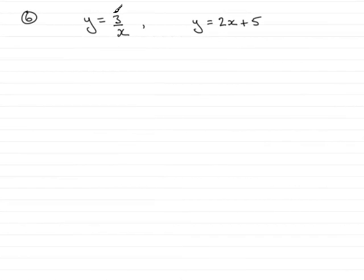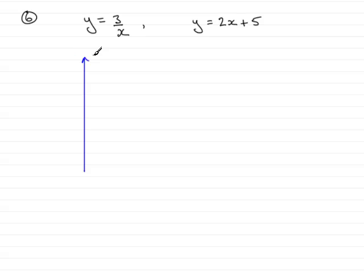In question number six we were asked to sketch the graphs of y equals 3 over x and y equals 2x plus 5 on the same graph. First of all we need to draw our axes — don't forget to label them and put arrows on the ends of the x and y-axis.